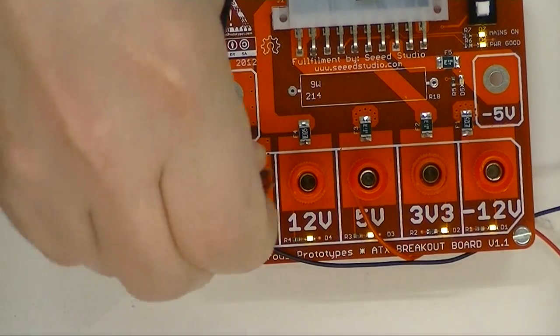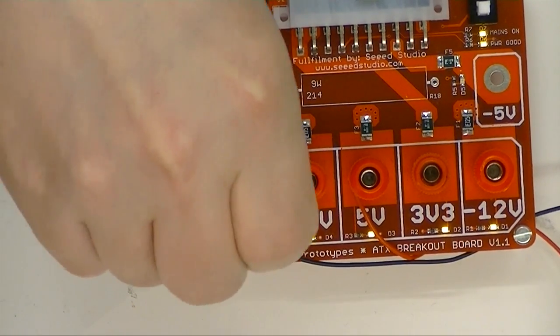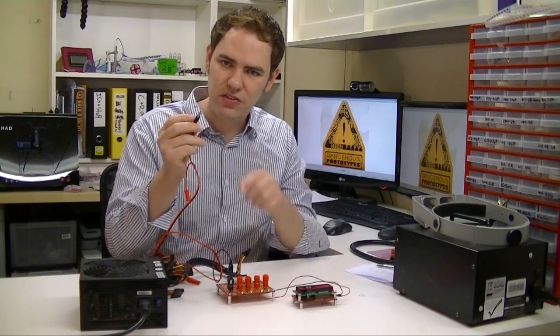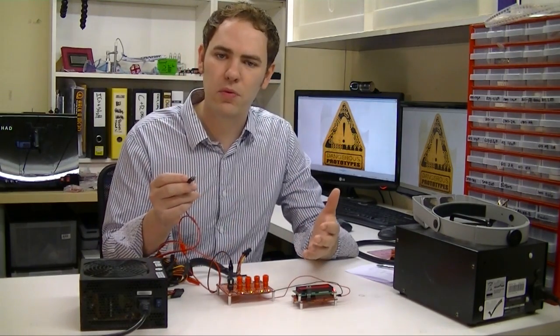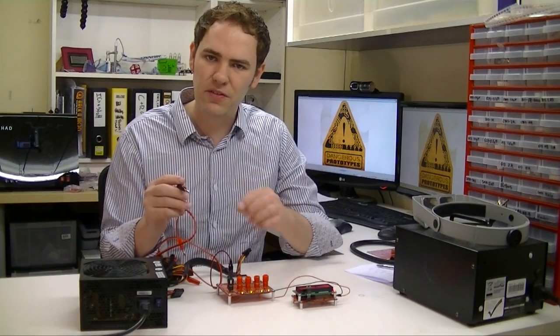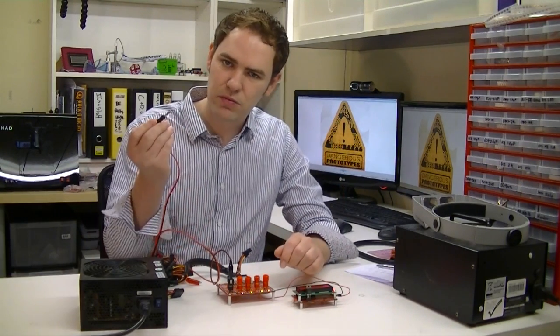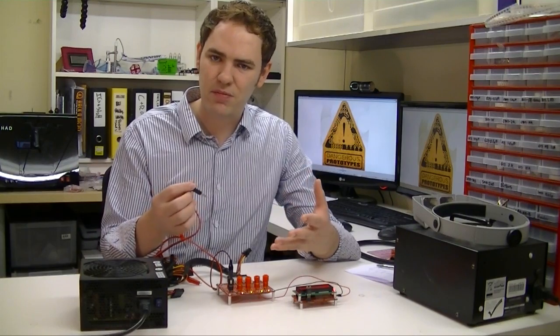We're going to clip one end of the banana plug to the ground and now we're just going to push this other banana clip straight into the 12 volt rail. Now that'll short it directly to ground and use way more than 1.25 amps of current. So the poly fuse will reset and the light will go out until we remove the short then it should come back on pretty quickly.